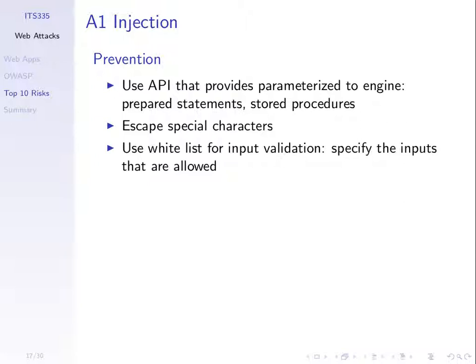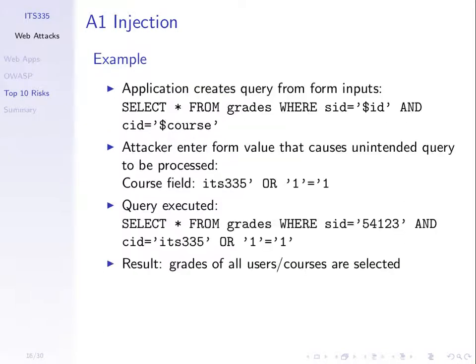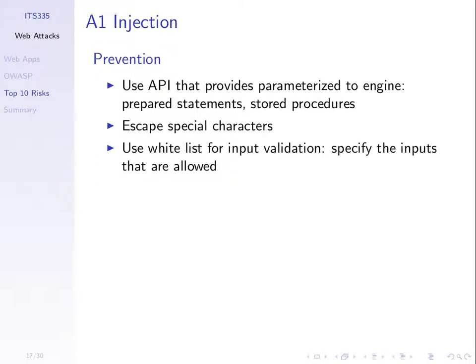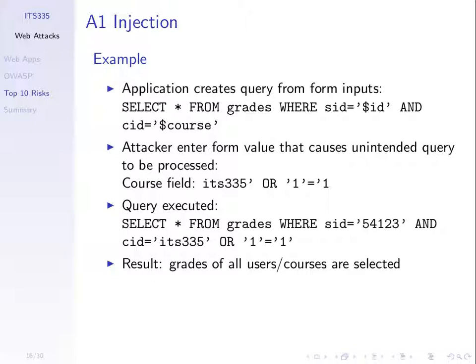But it requires the application developer to use those features. If you don't, then at least you need to try to escape special characters. In this case, the apostrophe and even the equals sign are special characters that should not be in the course code. You can escape them — use a special character to indicate this cannot be interpreted by SQL, it's just a string, or enclose it in double quotes. Alternatively, do input validation: the course code should be selected from a predefined list, so the user cannot enter any arbitrary string and cannot create that OR statement.